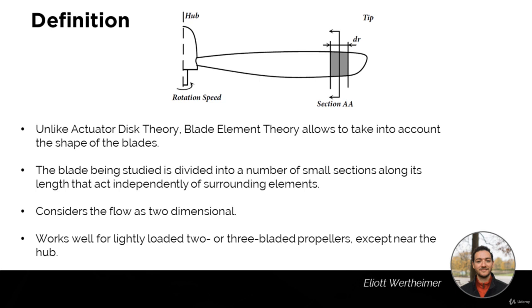The blade being studied in blade element theory is usually divided into a number of small sections along its length that act independently of surrounding elements, meaning we consider the flow as two-dimensional. We only consider the flow as if each section has no impact on the others, which in real life is not true because as the propeller rotates it creates vortices that give each section some aerodynamic impact on the others.